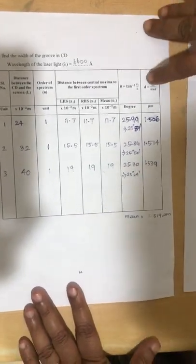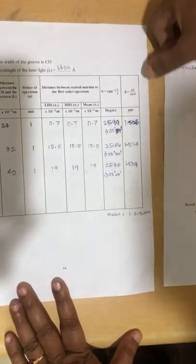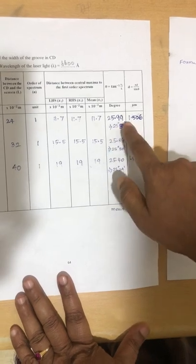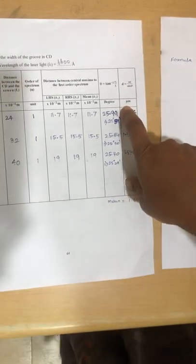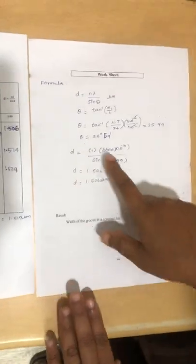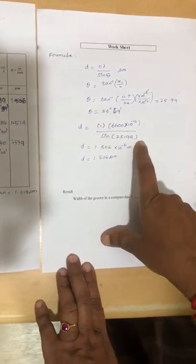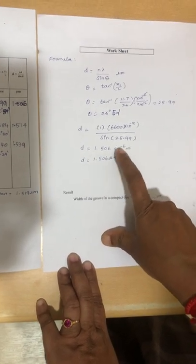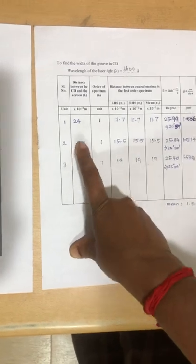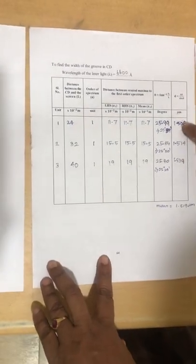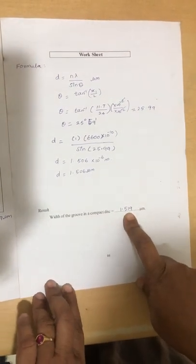With this theta value, we calculate D = nλ / sinθ, where n is the order, lambda is the wavelength, and theta is the angle of diffraction. The D value is identified as 1.506 micrometers (10⁻⁶ meters). The calculation is shown here: D = nλ / sin(25°59'). Like this, readings are taken for two more distances of L, and finally the average of all three D values is taken. The average width of the groove in the compact disc is identified as 1.519 micrometers.